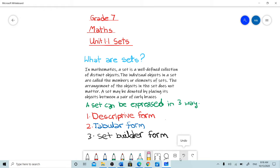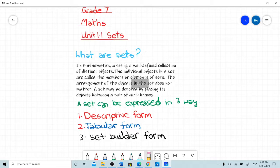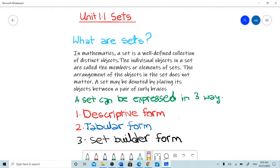What are sets? In mathematics, a set is a well-defined collection of distinct objects. The individual objects in a set are called the members or elements of sets. The arrangement of the objects in the set does not matter. A set may be denoted by placing its objects between a pair of curly braces.